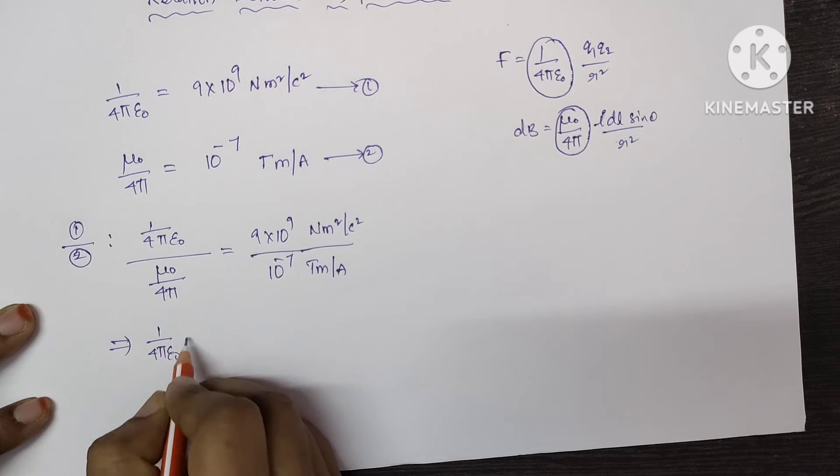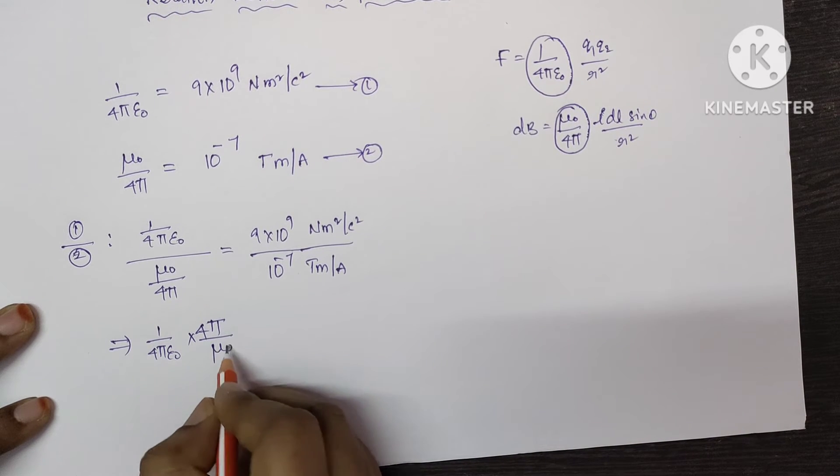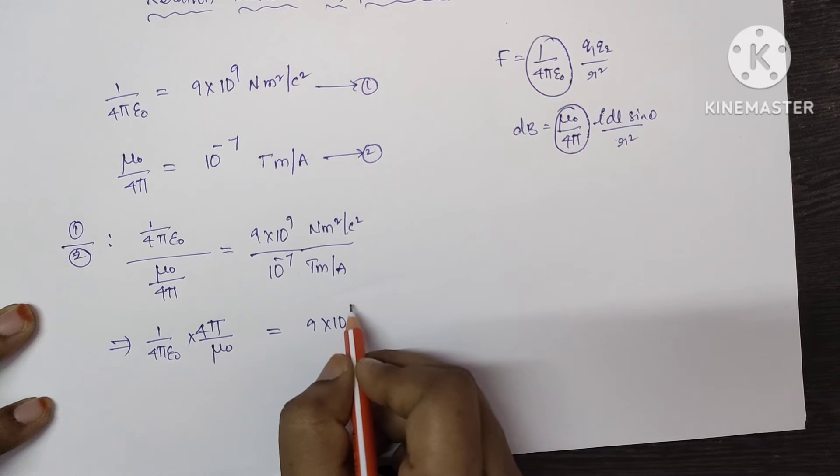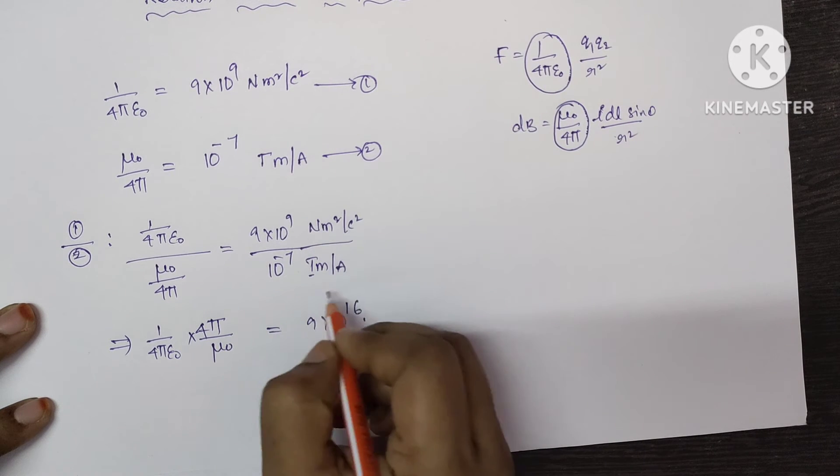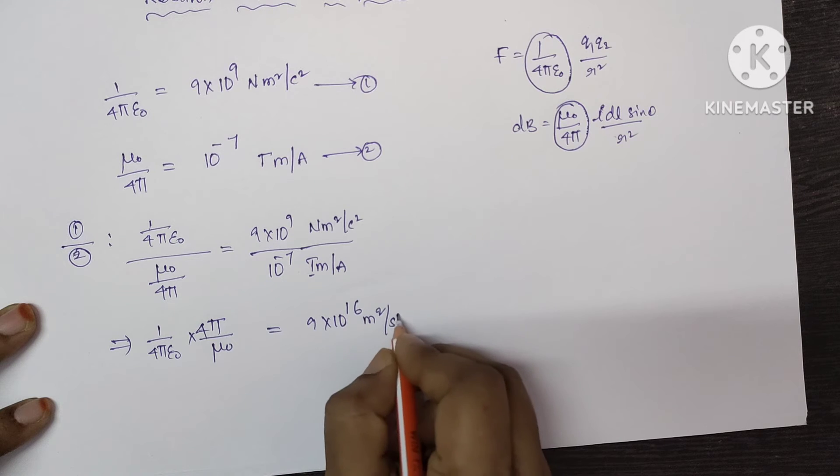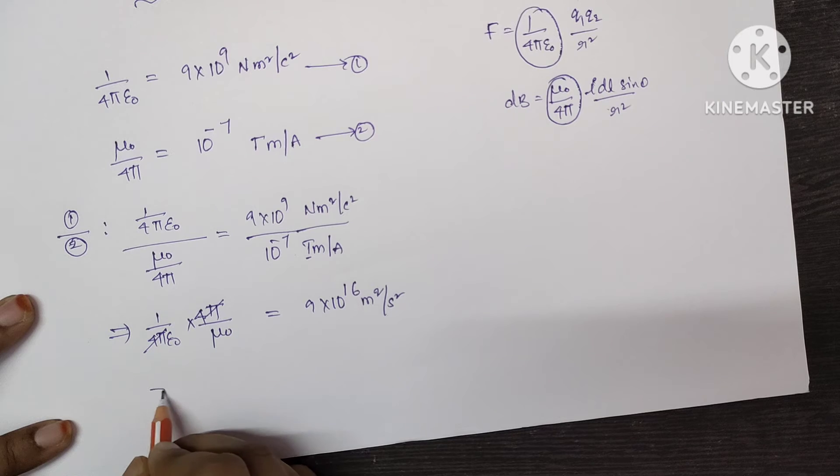1 by 4 pi epsilon 0 into 4 pi divided by mu 0 which is equal to 9 into 10 power 9 plus 7 which is equal to 9 plus 7 so which is equal to 16. So here by calculating the units you will get meter square per second square and here 4 pi and 4 pi will get cancelled.